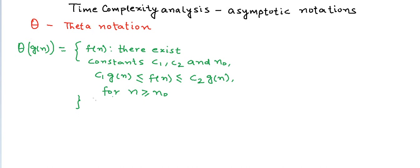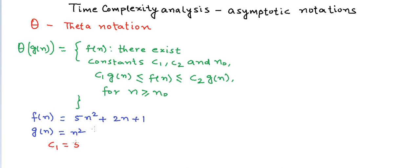Let's pick up the same example we used for Big O and Omega: f(n) = 5n² + 2n + 1 and g(n) = n². We can choose c1 = 5, c2 = 8, and n₀ = 1. The inequality holds, and we can say that f(n) is Θ(n²).